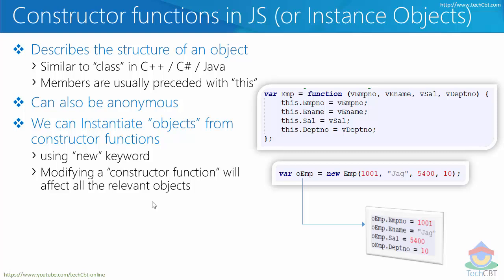One important feature is that whenever you modify the constructor function — just like modifying a class — it automatically affects all relevant objects. Because you are modifying the structure, any instance created based on that structure will reflect the same template. So essentially, adding or modifying the structure means you are modifying the definition, values, or members available inside all instances.